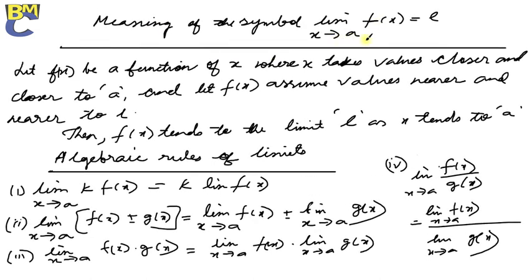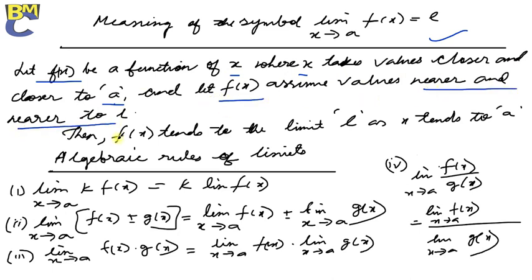The meaning of the symbol: limit of f(x) as x tends to a equals L. Let f(x) be a function of x. When x takes values closer and closer to a, and f(x) assumes values nearer and nearer to L — that means when the values of x are closer to a, the values of f(x) will be closer to L — then f(x) tends to the limit L as x tends to a.